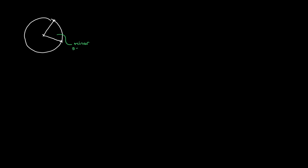Each of those two sectors has a name. The small one is known as the minor sector, and the bigger one is known as the major sector. So all a sector really is — I like to think of it as a slice of pizza. It's a part of the circle that's been cut out by joining the center to two points of the circumference. The starting point has to be the center of the circle for it to be a sector.